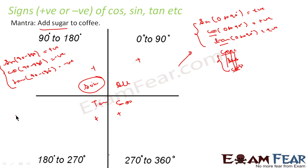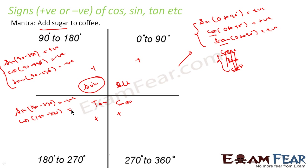In the third quadrant, only tan is positive. So if I take any number from 180° to 270°, sine is negative and cos is also negative, but tan in this case is positive.